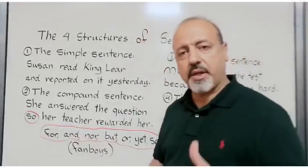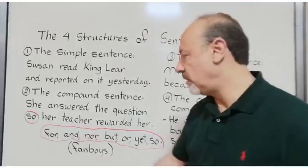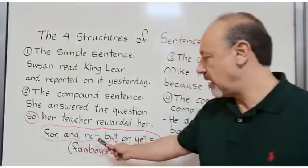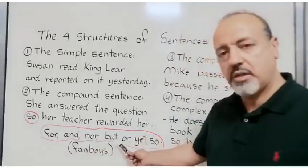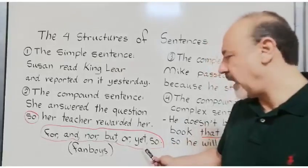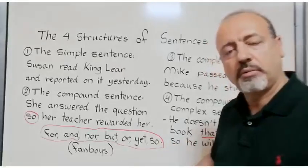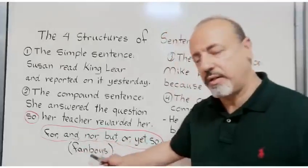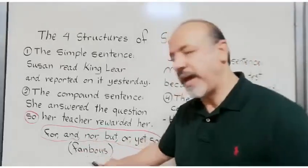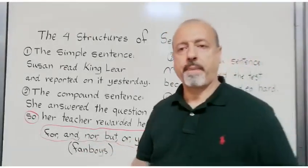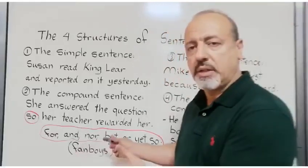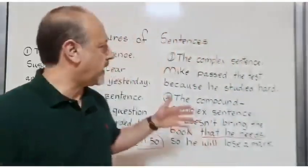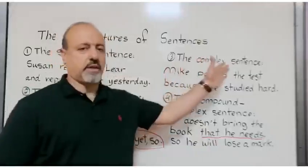Remember that the coordinating conjunctions are: for, and, nor, but, or, yet, so — and they are combined with the abbreviation FANBOYS. So this is a compound sentence.